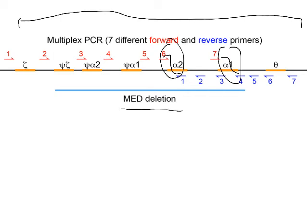On the other hand, somebody who has suffered the Mediterranean deletion is missing a very large piece of DNA. All the primer sites in the middle are gone, so none of those primer pairs give any PCR products.